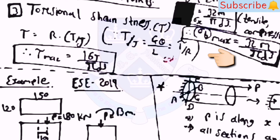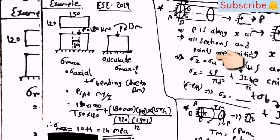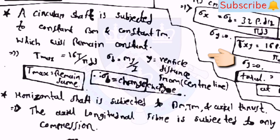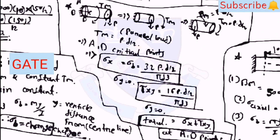There is an example which was asked in GATE 2019. Note: if a circular shaft is subjected to a constant bending moment and constant twisting moment, tau_max remains constant but sigma_b will change, because tau_max = 16T/(π·d³) is independent of orientation, whereas sigma_b = M·y/I depends on y, the vertical distance from the centerline, which changes during rotation. Two more examples are provided — take a screenshot to calculate them.